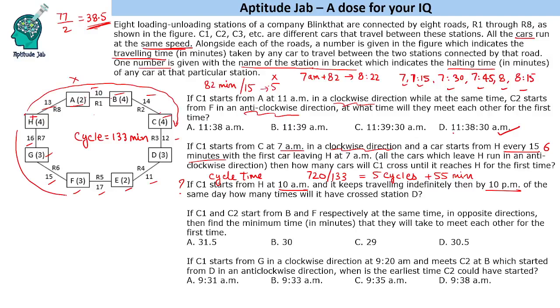Similarly, if it goes in this direction, 16, 19, 34, 37, 54, 56. So it cannot reach D. In either case, it cannot reach D in 55 minutes. So it does not matter whether it started clockwise or anticlockwise, it would have crossed station D only 5 times.